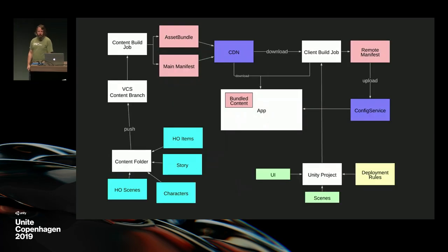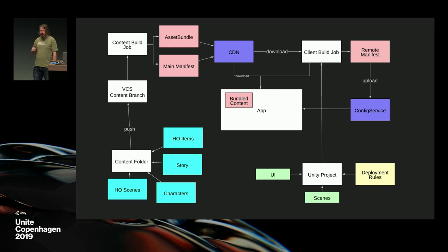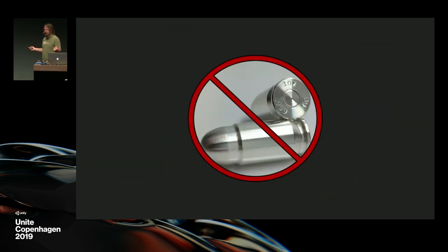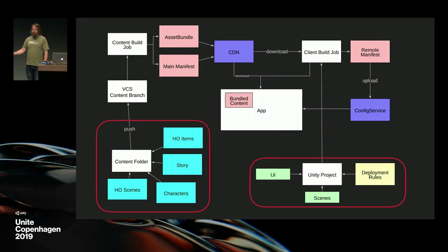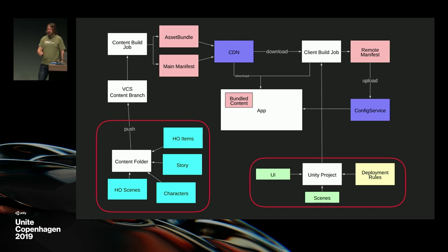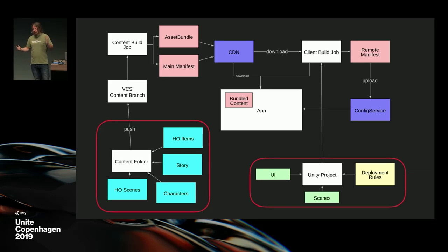So how do we deal with this? We have what we call the content pipeline. The main idea — which I've heard many times — is we separate the content from the Unity project completely. Everyone who's worked on a big Unity project knows the feeling: you move a folder in Unity, grab a coffee, come back, and realize you moved it to the wrong place. To avoid that, we keep content completely outside the Unity project, which gives us a fast Unity project.